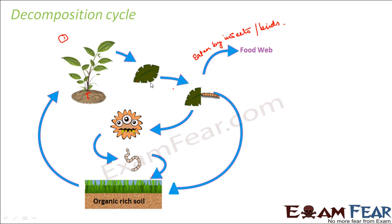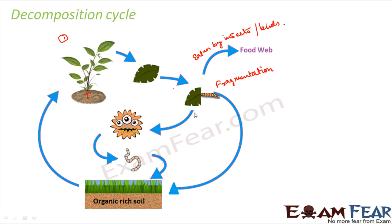However, some of the leaves might not be eaten by any animal and they just remain on the soil. Those leaves will then undergo the first step of decomposition — fragmentation — where detritivores like earthworms break them down into smaller particles. This is followed by leaching, where water-soluble nutrients dissolve and move deep down into the soil horizon.